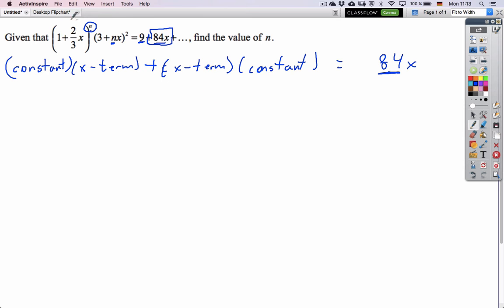The constant term from 1 to any power is just 1, so that piece of this expansion is just 1. The x term here comes from expanding 3 plus nx, so 3 plus nx times 3 plus nx. You get 9 plus 6nx, coming from 3nx's and 3 more, and then n squared x squared. So this is the one we want.